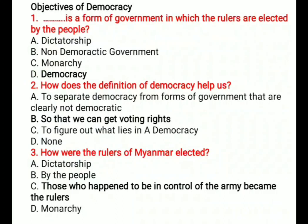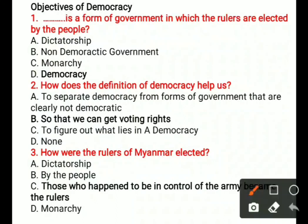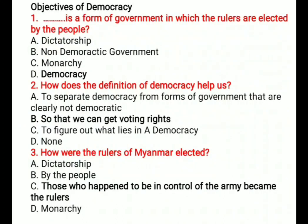Question 2: How does the definition of democracy help us? Options are: A) To separate democracy from forms of government that are clearly not democratic, B) So that we can get voting rights, C) To figure out what lies in a democracy, D) None. The correct option is B, so that we can get voting rights.